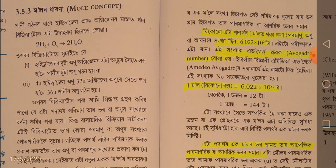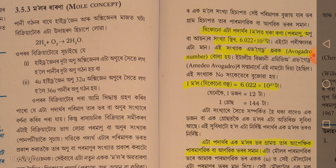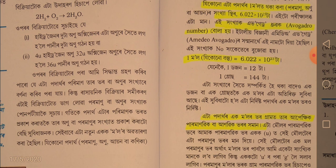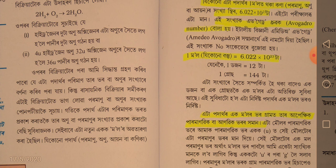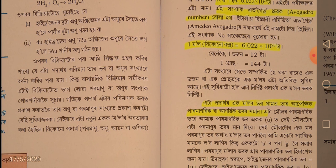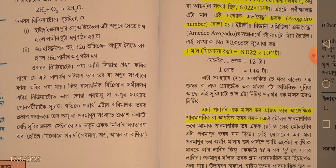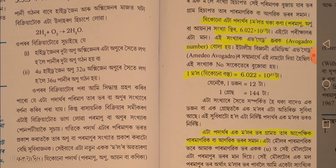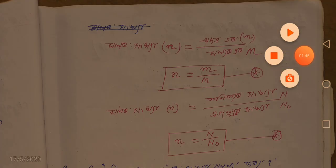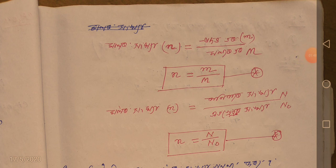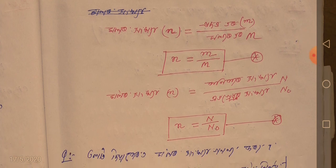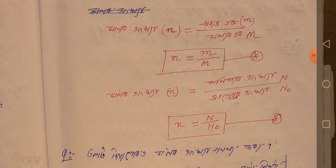1 mole is equal to 6.022 into 10 to the power of 23. 1 mole is equal to G, 2 moles is equal to G, and the molar mass relationship follows.